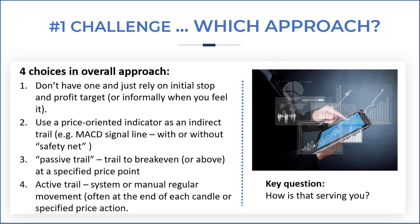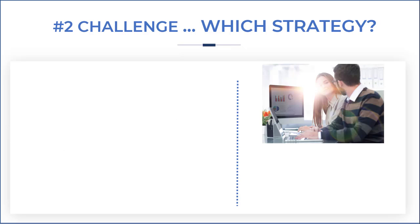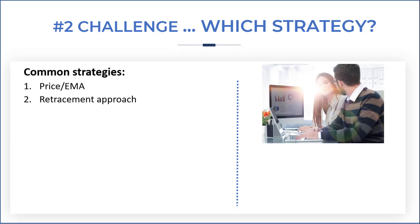Whichever approach you're using now, ask the question: how is that serving you? Look at your results, look at what you've had to give back to the market — which of course is what we're trying to minimise with trail stops — and decide whether you could do better. The second challenge, of course, is which strategy to use. If you are going to use a proactive stop, the common strategies include a price EMA cross or a retracement approach.